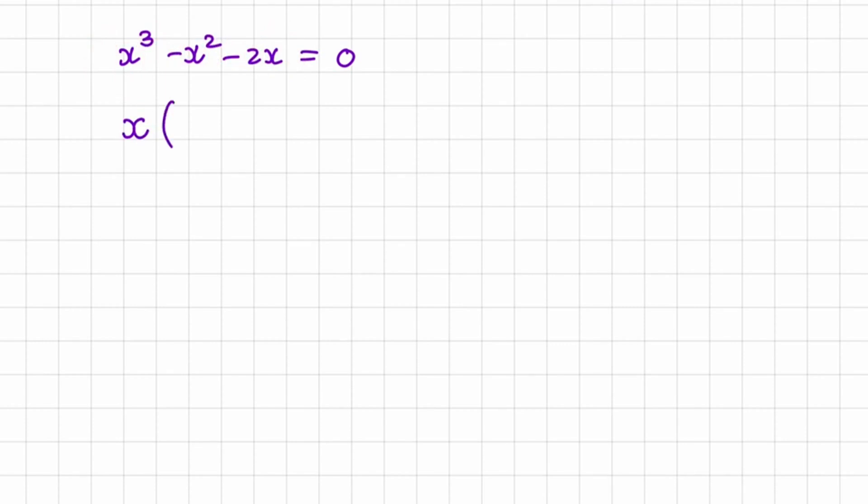If I take out a common factor of x, I'll have x squared in my first term minus x minus 2 equal to 0.